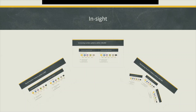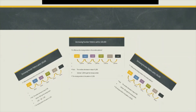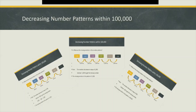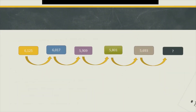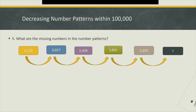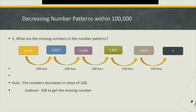Now let's talk about decreasing number patterns. We have three examples in this section. The first one — look at these numbers. What number pattern do you see and what is the missing number? One hundred and eight less, isn't it? So we're going to subtract 108 to get the missing number, and the missing number is five thousand five hundred and eighty-five.